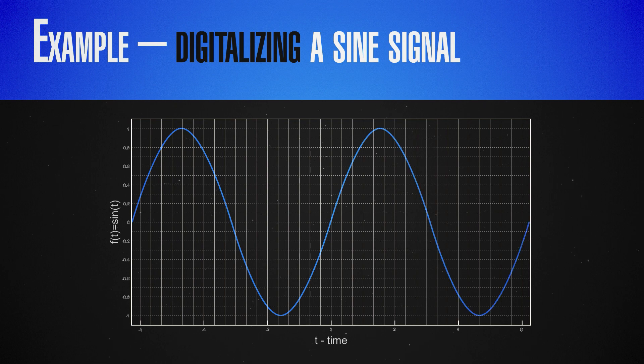A machine would have a definite time step and a definite signal step. It would see values at every given point — it would not really see the full continuous function, but only a set of values each corresponding to this grid. Any digital device we have right now would not be able to see the signal as a continuous thing, but only as a discrete number of points.